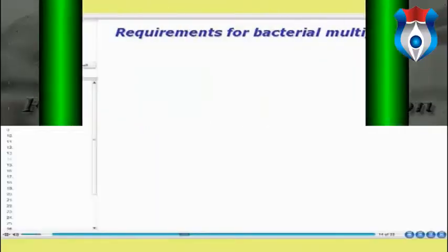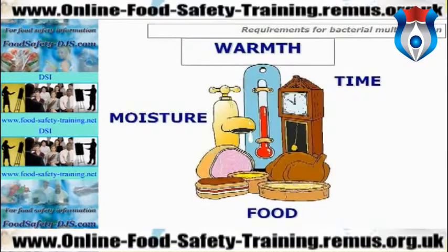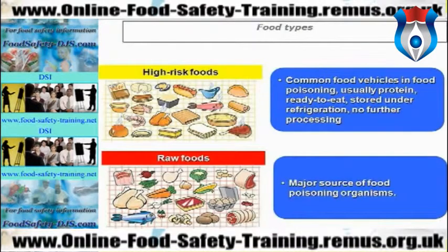Let us look at the requirements for bacterial multiplication. Bacteria need similar things to us in order to grow: food, moisture, warmth and time. We will look at each of those properties individually. First, let's look at the different types of food — high-risk food is the major source of nutrients for food poisoning bacteria and is a common cause of food poisoning.